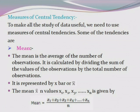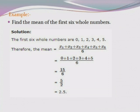The definition of mean: it is the average of the number of observations. It is calculated by dividing the sum of values of the observations by the total number of observations. It is represented by x̄. The mean x̄ of n values x₀, x₁, x₂, x₃, ... xₙ is given by x̄ = (x₀ + x₁ + x₂ + ... + xₙ) / n.